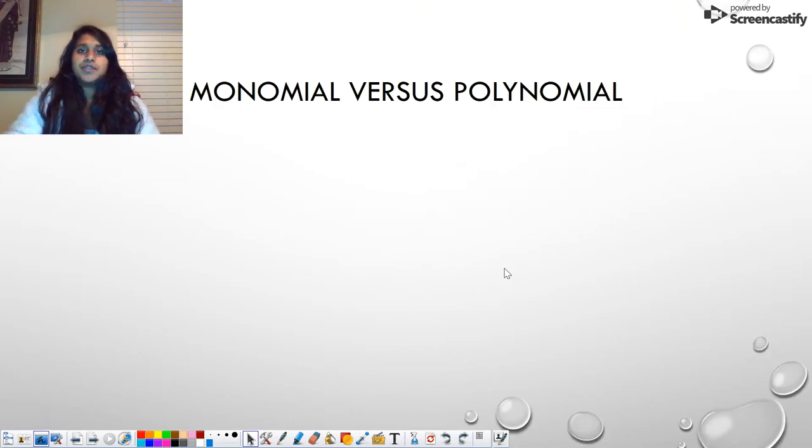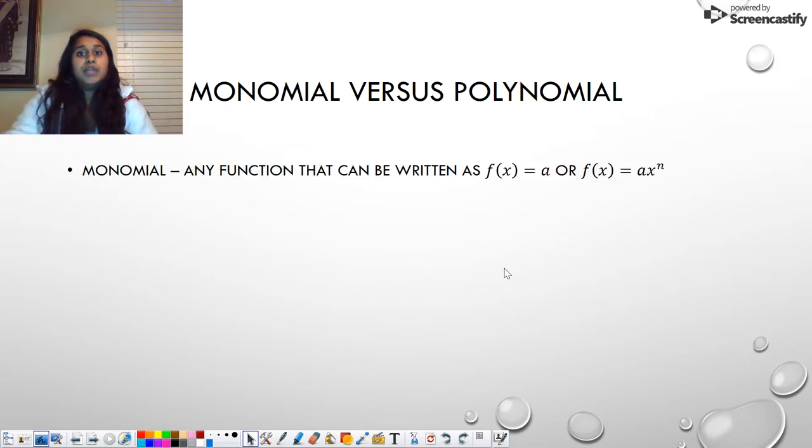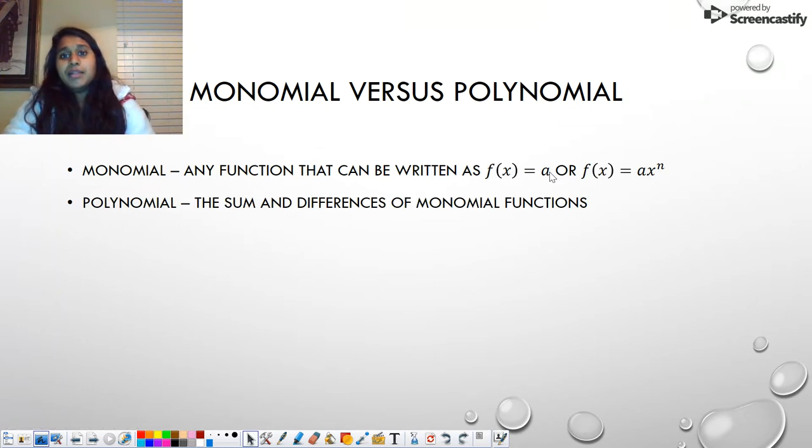So very first, first things first, what is a polynomial and what is a monomial, binomial? I've used these terms in class, so I want to make sure we understand what they are. A monomial is a polynomial, just like a square is a rectangle, but rectangles are not squares. A monomial is a polynomial, but not all polynomials are monomials. Polynomials are going to be monomial functions that have sums and differences.